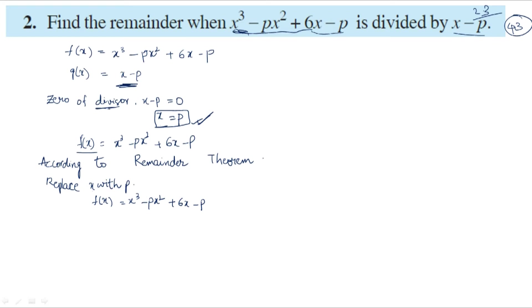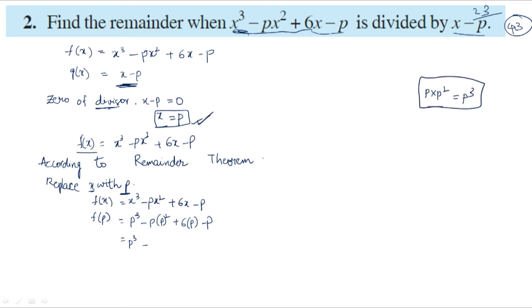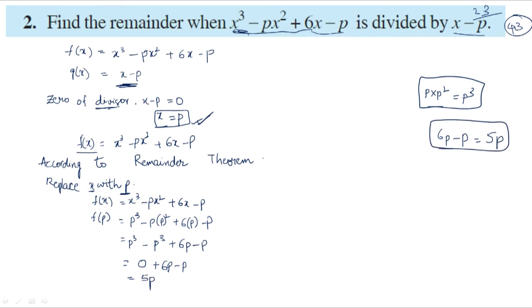We replace x with p: f of p equals p cubed minus p times p squared plus 6 times p minus p. That is p cubed minus p cubed plus 6p minus p. Here p cubed minus p cubed becomes 0, leaving 6p minus p.